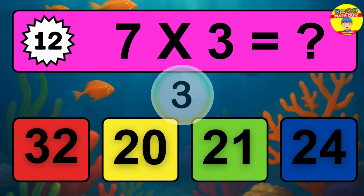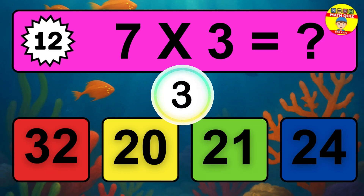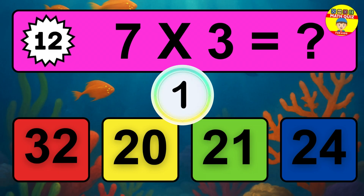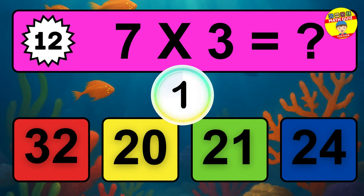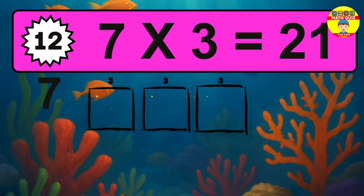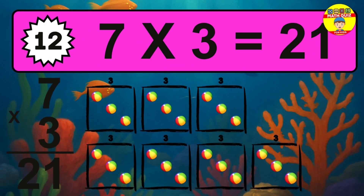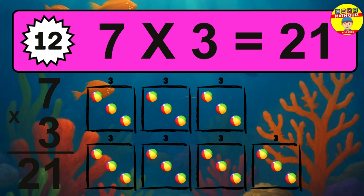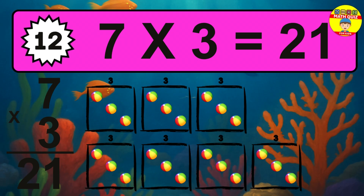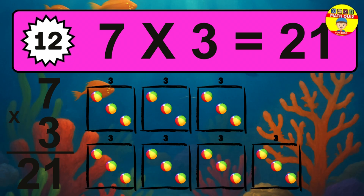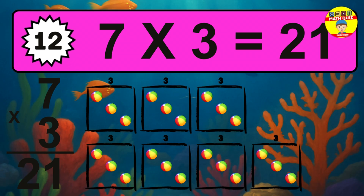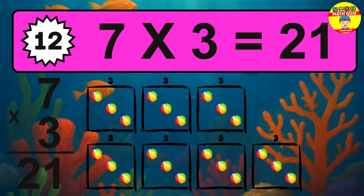Question 12. 7 times 3 equals what? The answer is 7 times 3 is 21. To calculate, we have 7 groups with 3 balls each one. So, how many balls do we have? 21 balls.